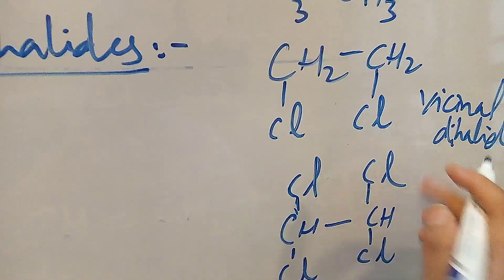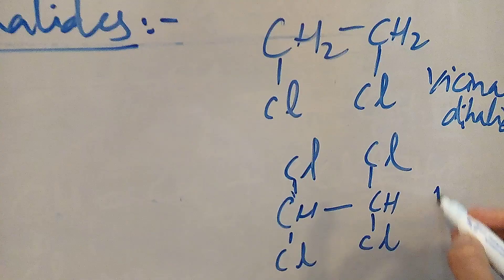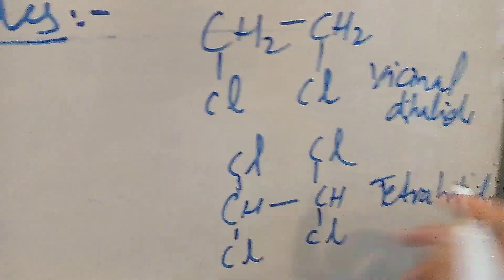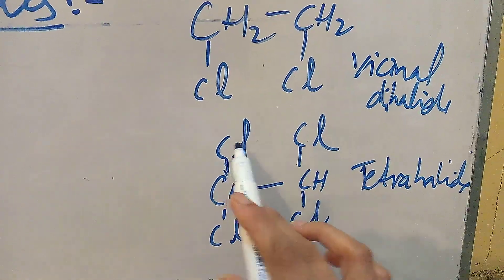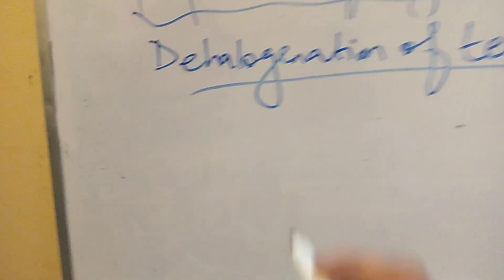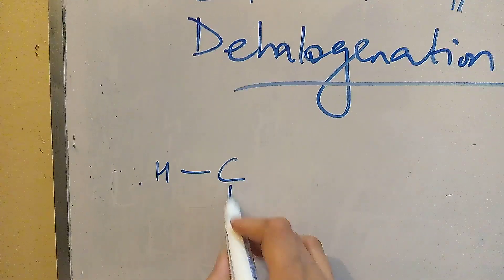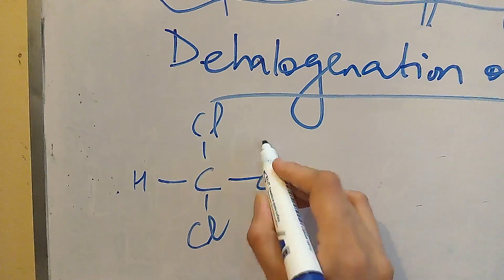Tetrahalides have four halogen atoms present on adjacent carbons. So we take tetrahalide, you can also write CHCl2-CHCl2. Tetrahalides have four halogen atoms present.